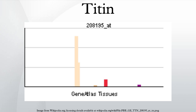A number of Titin isoforms are produced in different striated muscle tissues as a result of alternative splicing. All but one of these isoforms are in the range of 27,000 to 33,000 amino acid residues in length. The exception is the small cardiac nerve N2B isoform which is only 5,604 amino acid residues in length.